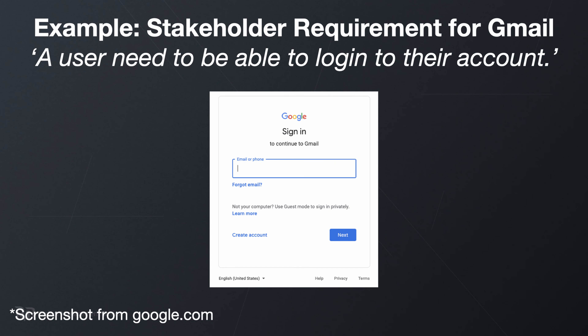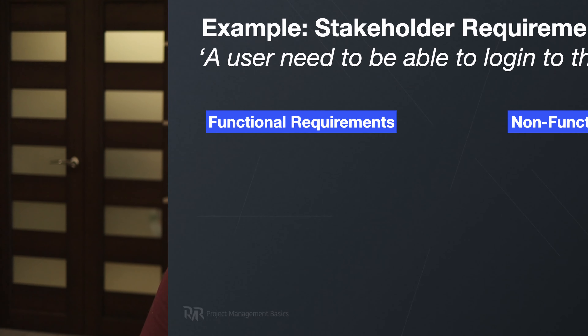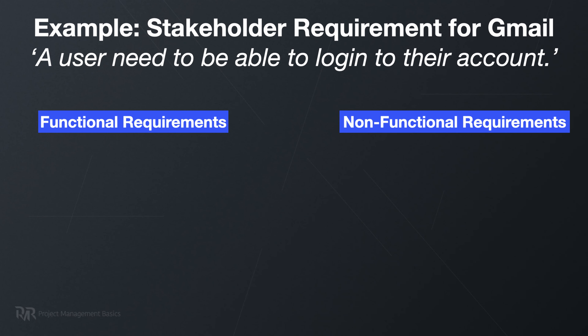For example, let's take a look at Gmail. A high-level stakeholder need might sound like: a user needs to be able to log into their account. From here you will derive a lot of functional and non-functional requirements. For functional requirements, I recommend that you stick to user stories as much as possible — that's one of the simplest forms of requirements documentation you can use.